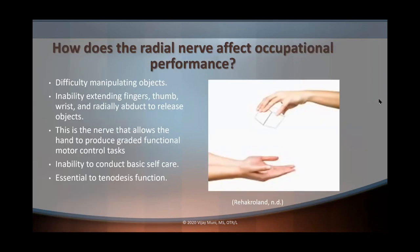Now let's talk about how the radial nerve affects occupational performance. Remember the radial nerve innervates the wrist extensors, finger extensors, and thumb extensors — those muscles are important especially when we want to release an object. People with radial nerve injury are going to have a lot of difficulty with manipulating objects and extending their extensor muscles to release those objects. Imagine working with somebody on picking up a toothbrush or a bar of soap — the person can grab it, but releasing it will prove difficult. A radial nerve injury causes the inability to conduct basic self-care.